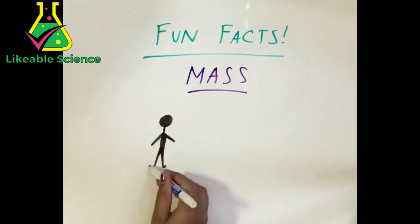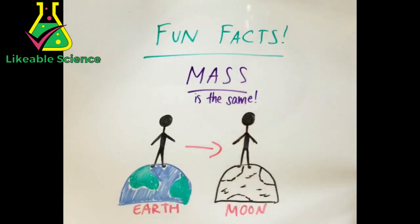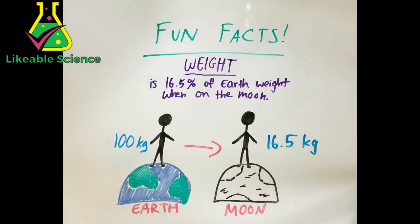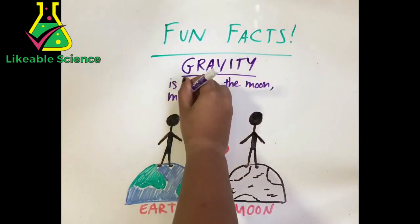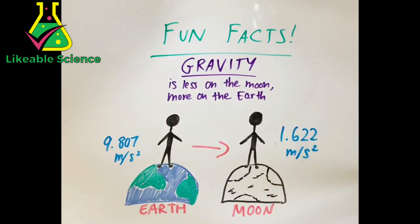And now for some fun facts. Mass is actually the same anywhere you go—the Earth, the Moon, or any other planets. Your weight on the Moon is actually 16.5% of your weight on the Earth. But the gravitational force on the Moon is significantly less than the gravitational force on the Earth.